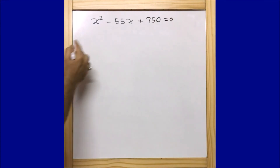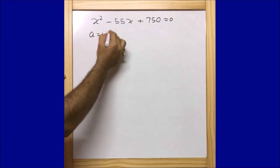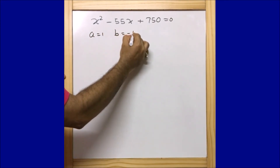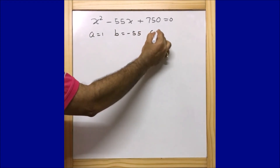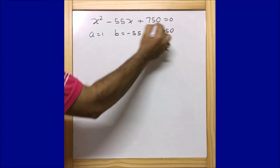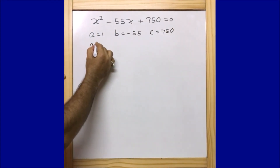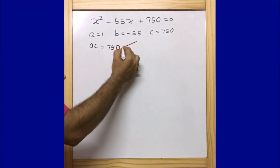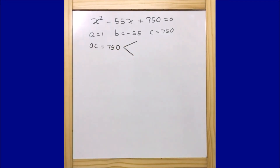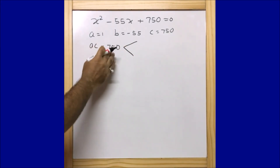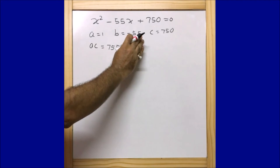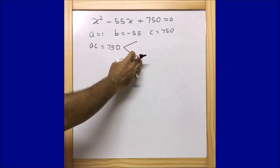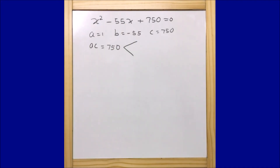Here a equals 1, b equals minus 55, and c equals 750. So ac equals 750, because 1 times 750 is 750. We need to find two numbers whose product is 750 and whose sum is minus 55.